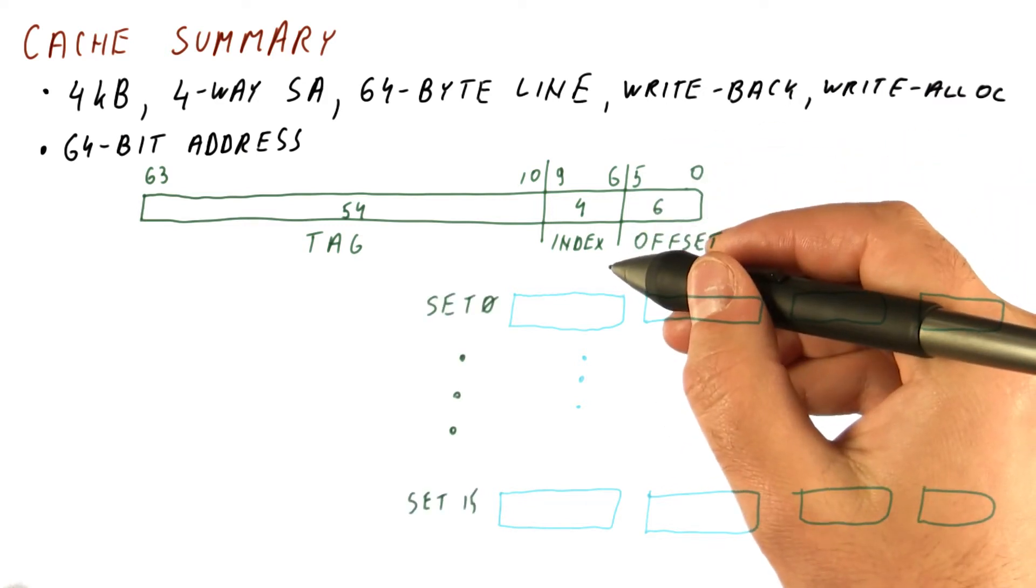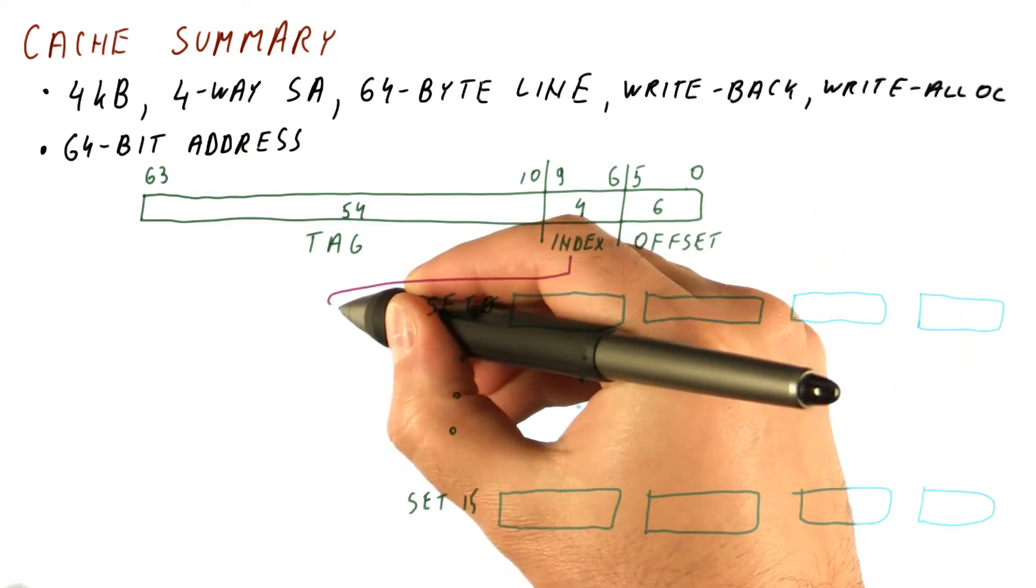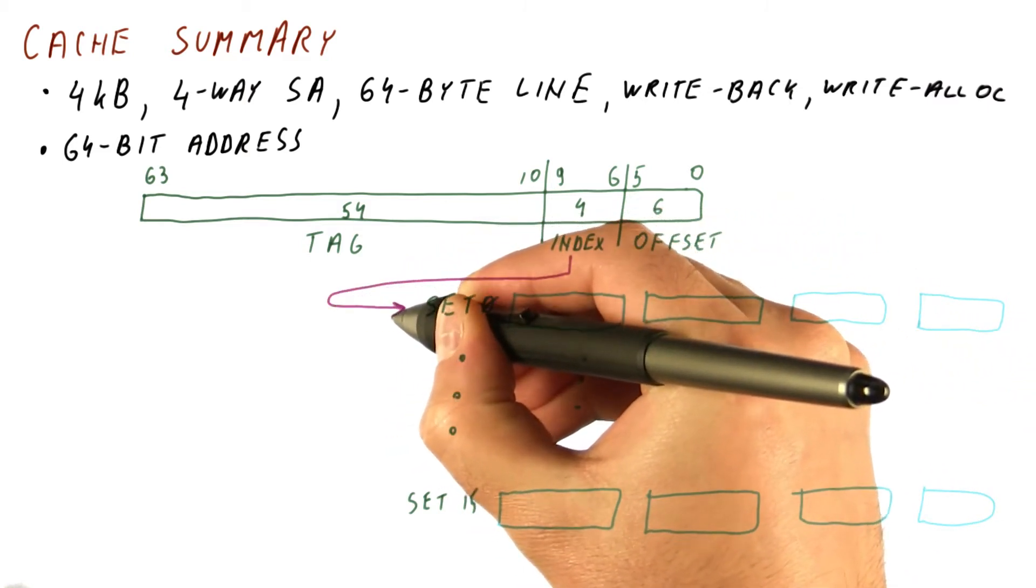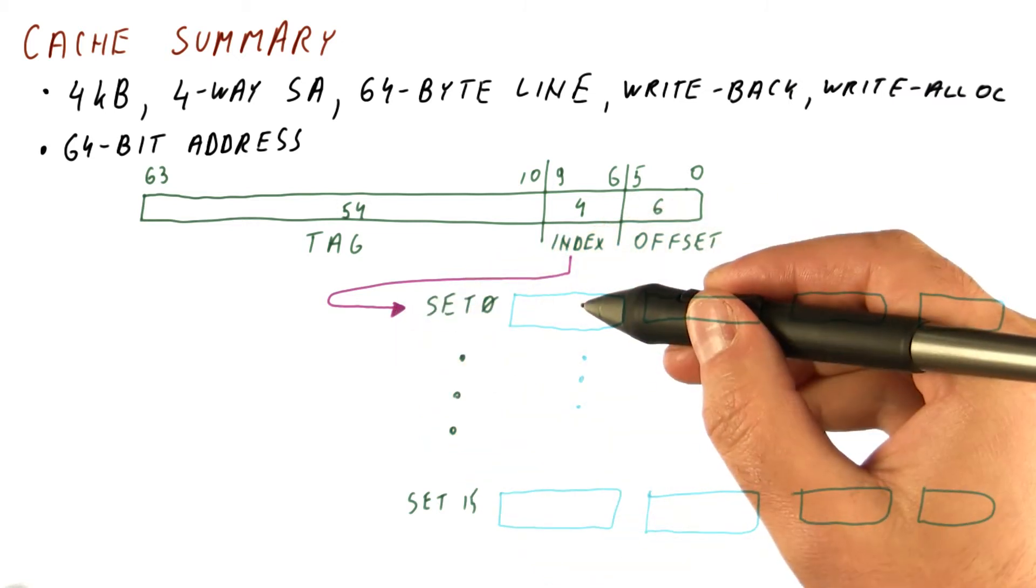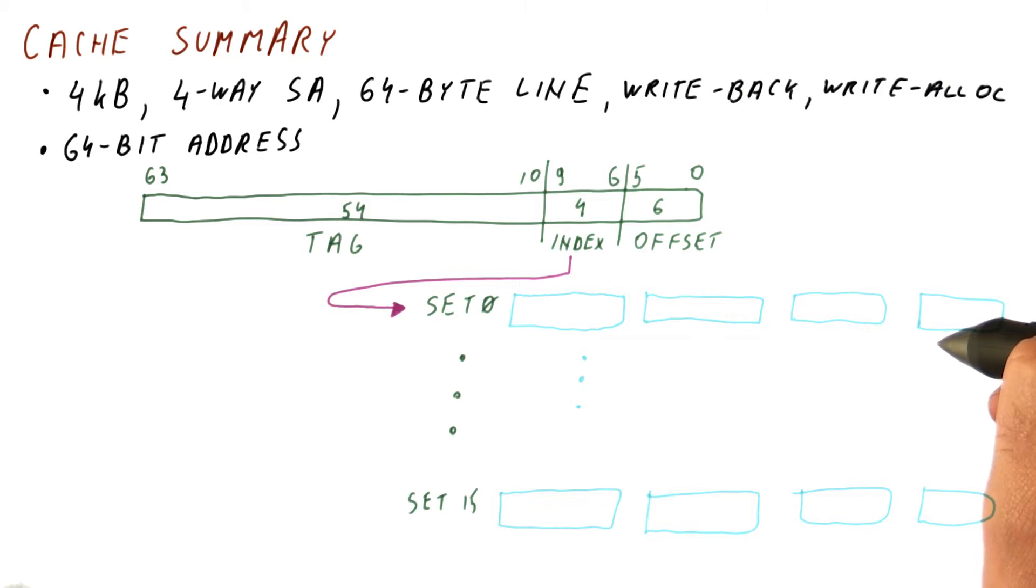So the way we access this cache is we take the index bits, and they tell us which set we have. Let's say we have set 0.